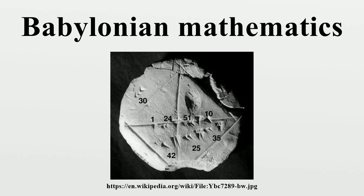The Plimpton 322 tablet contains a list of Pythagorean triples, i.e., integers such that the triples are too many and too large to have been obtained by brute force. Much has been written on the subject, including some speculation as to whether the tablet could have served as an early trigonometrical table. Care must be exercised to see the tablet in terms of methods familiar or accessible to scribes at the time. The question of how the tablet was calculated does not have to have the same answer as what problems the tablet sets. The first can be answered most satisfactorily by reciprocal pairs, as first suggested half a century ago, and the second by some sort of right triangle problems.